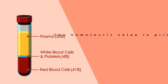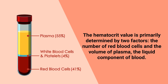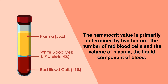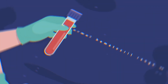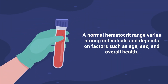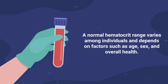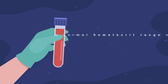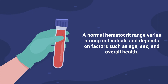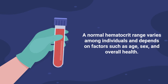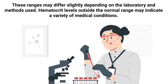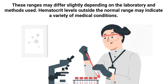The hematocrit value is primarily determined by two factors: the number of red blood cells and the volume of plasma, which is the liquid component of blood. A normal hematocrit range varies among individuals and depends on factors such as age, sex, and overall health. In adult men, the typical range is approximately 41 to 50 percent, while in adult women it is roughly 36 to 44 percent. These ranges may differ slightly depending on the laboratory and methods used.